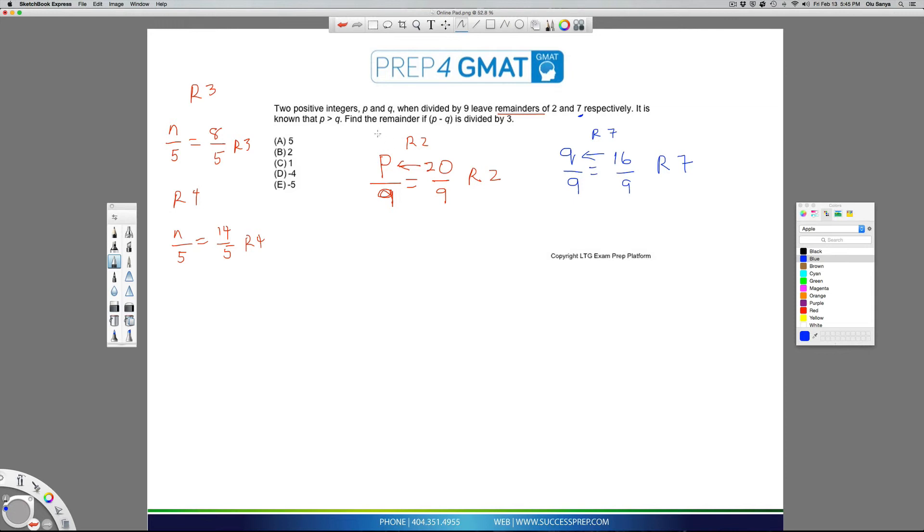So we can go ahead and answer the rest of this question, which says find the remainder when P minus Q is divided by three. Well, my P minus Q, my P is 20, my Q is 16, based on the math we've done here, which gives us four. And then the question is saying divide that by three and tell us what the remainder is.